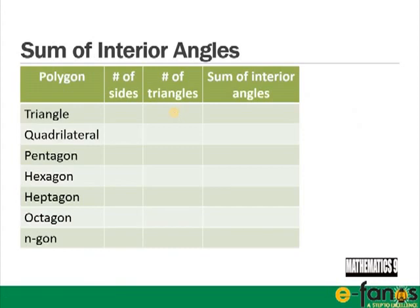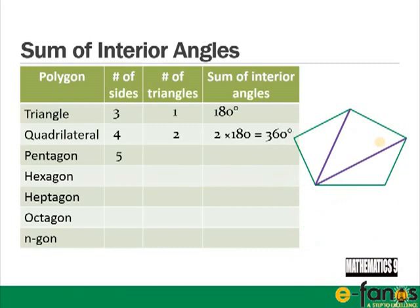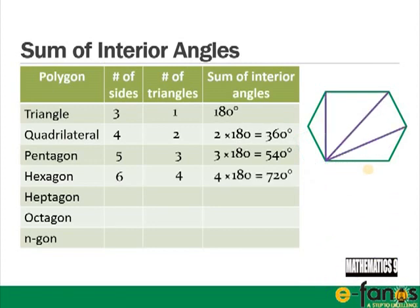Here's a table showing the number of sides, the number of triangles, and the sum of interior angles of different polygons. A triangle has three sides, one triangle, and interior angles summing to 180°. A quadrilateral has four sides, two triangles, and angles summing to 360°. A pentagon has five sides, three triangles, summing to 540°. A hexagon has six sides, four triangles, summing to 720°.